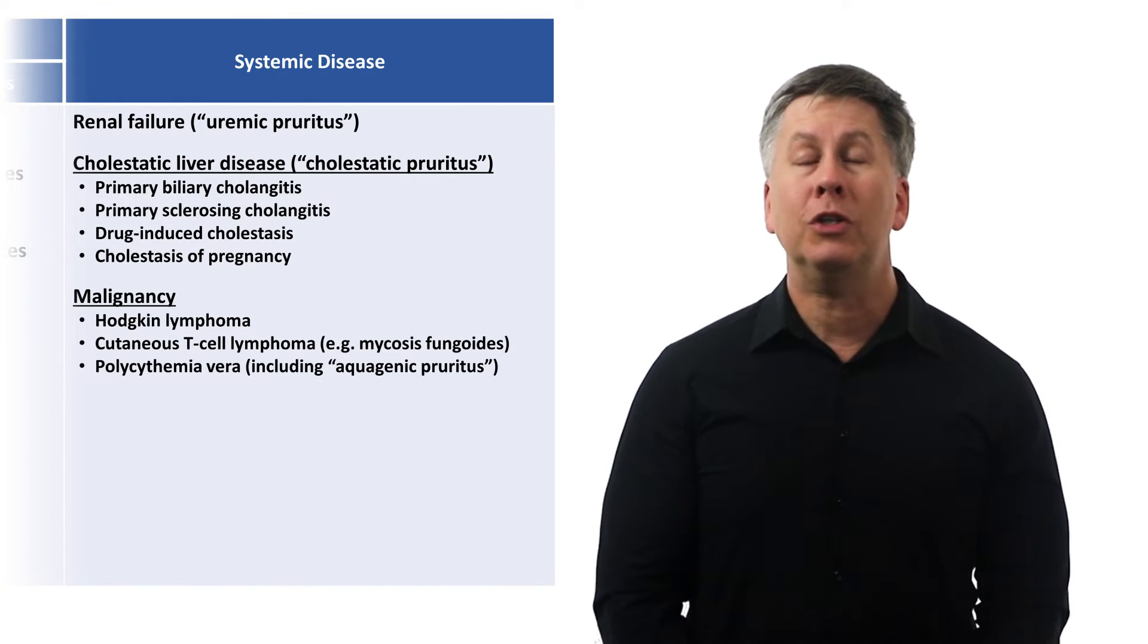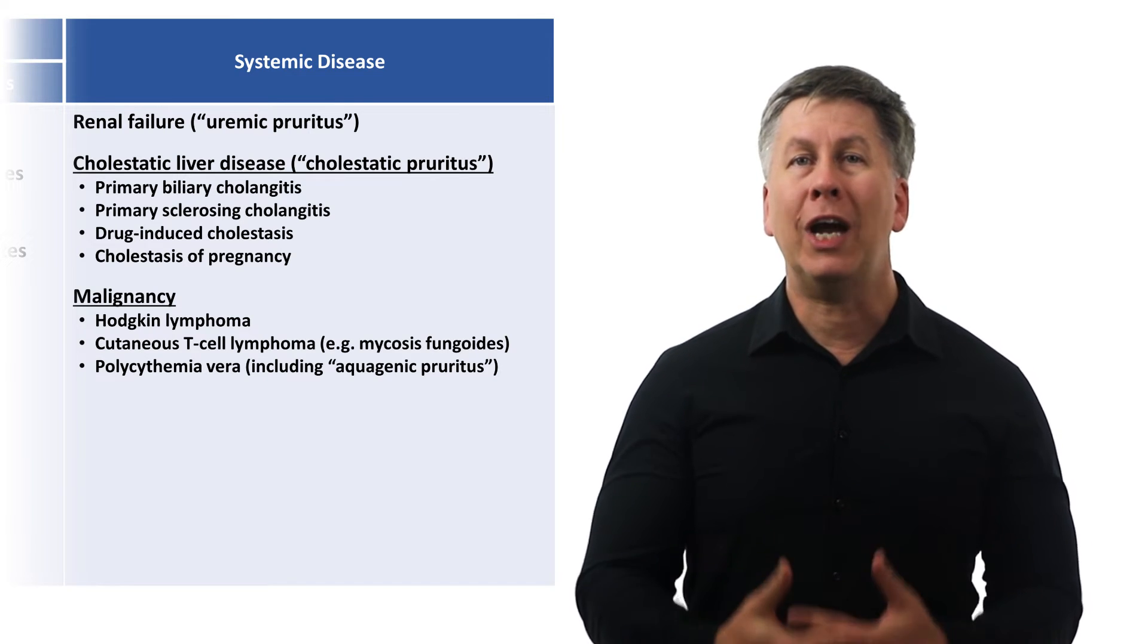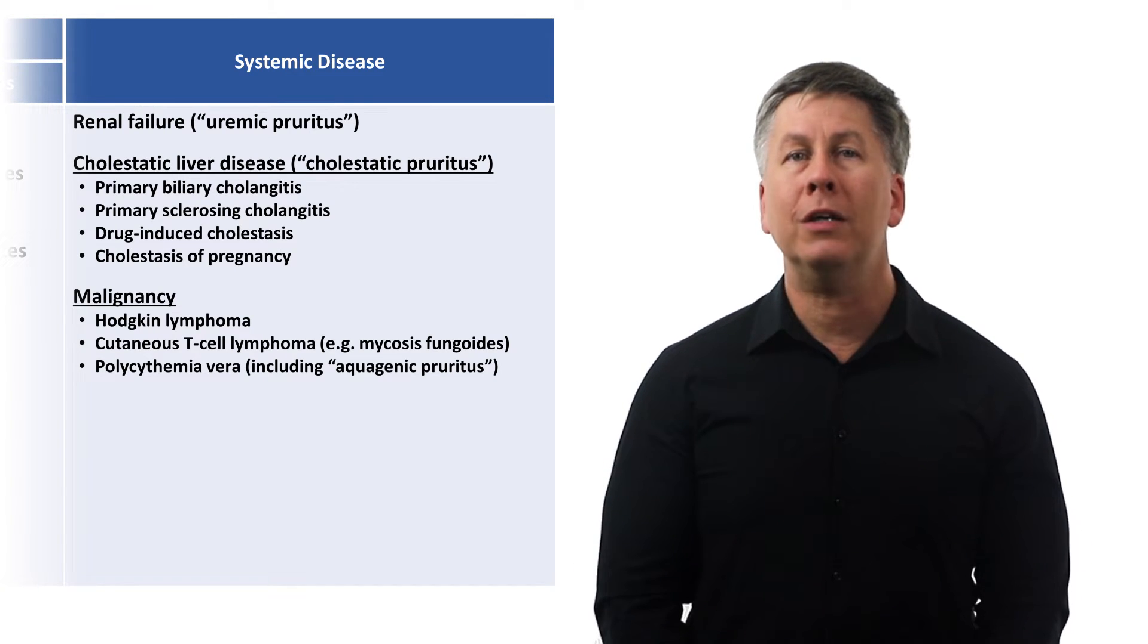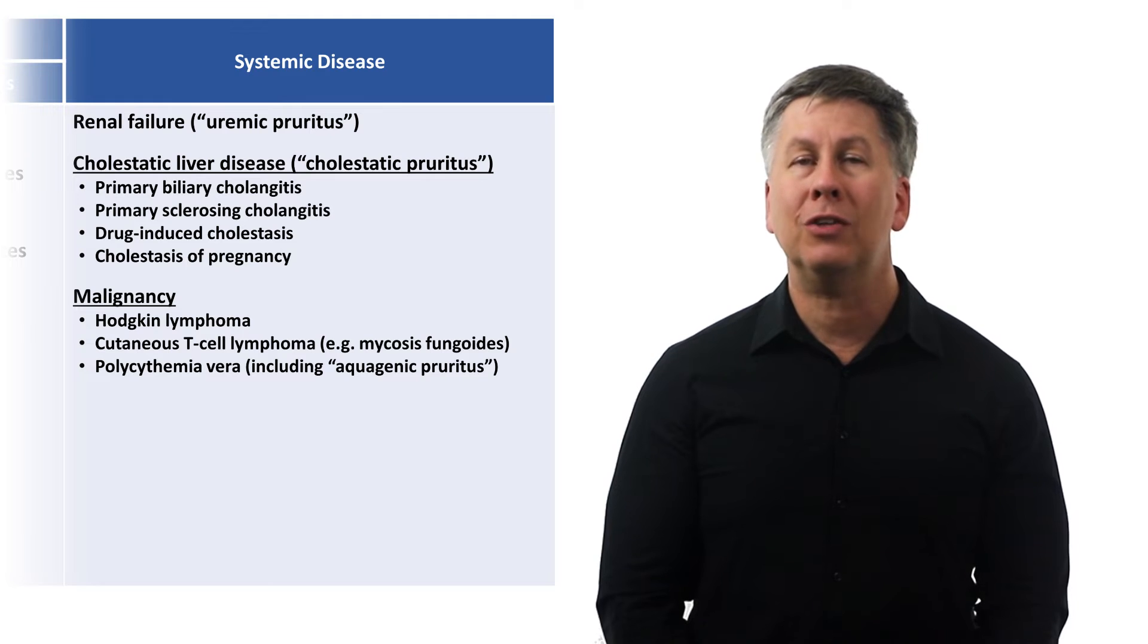Polycythemia vera, often known as just P-vera, is a chronic leukemia of red blood cell precursors. It is associated with a distinctive symptom called aquagenic pruritus, which is when the pruritus is triggered by physical contact with water.